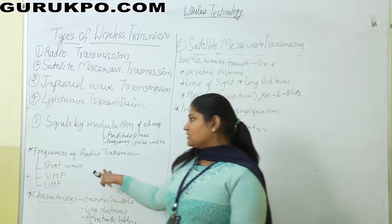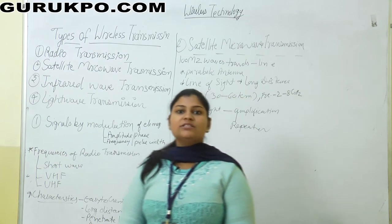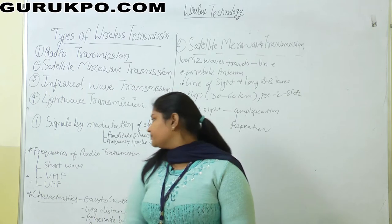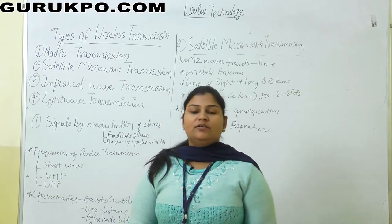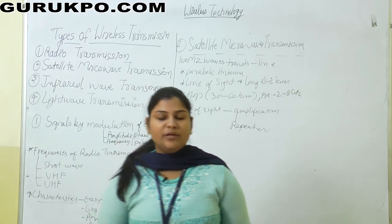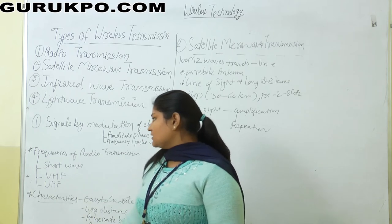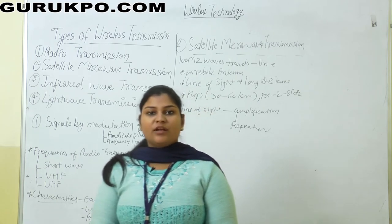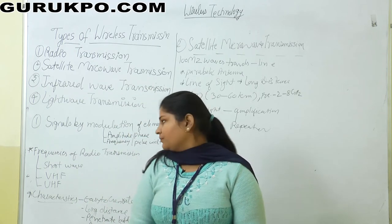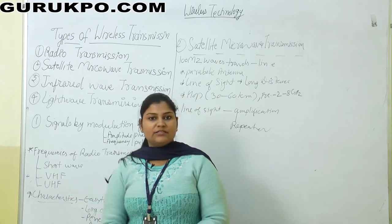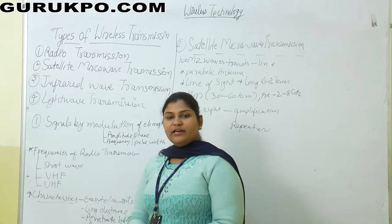Now we are going to discuss about the frequencies of radio transmission. Frequency is the speed at which data signals are carried. First is short wave frequency, where data goes from one place to another in a short range or low distance. Next is VHF, which stands for Very High Frequency — more than short wave transmission. Third is Ultra High Frequency, which is more frequent than short wave and very high frequency.